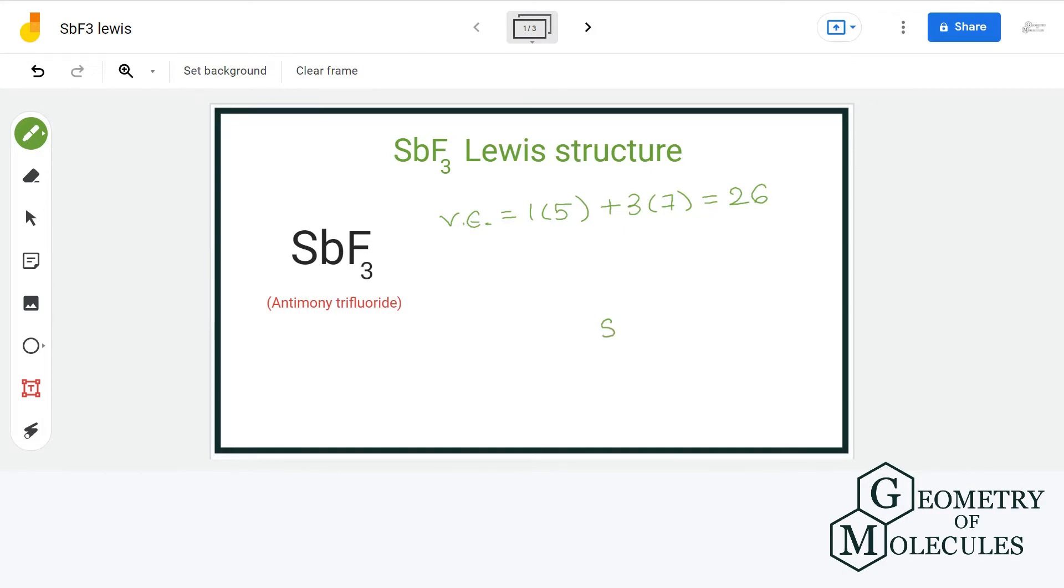For the arrangement of atoms, we will place antimony in the center as it is the less electronegative element and arrange fluorine atoms around it.